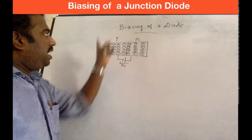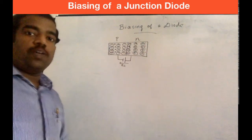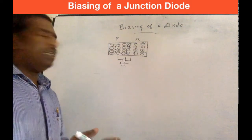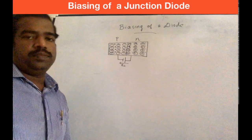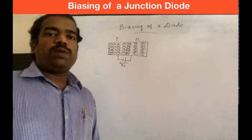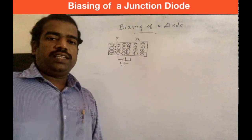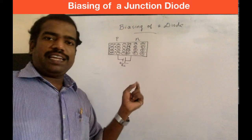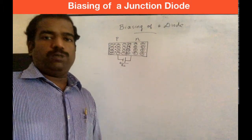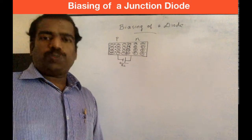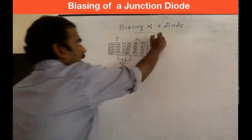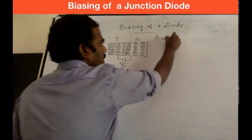In the direction of the electric field, we can collapse the depletion region. We can apply a potential difference across this diode. If we apply a potential difference, current conduction becomes possible. The process of applying a potential difference across a diode is called biasing of a diode.